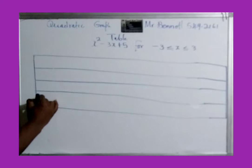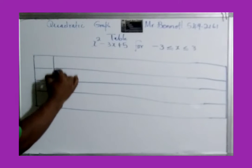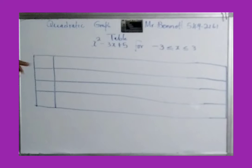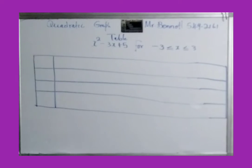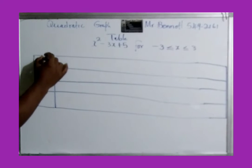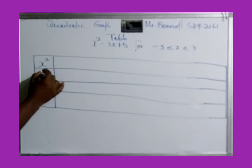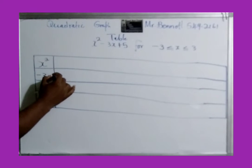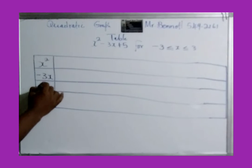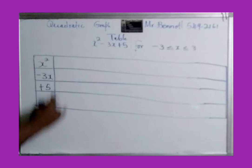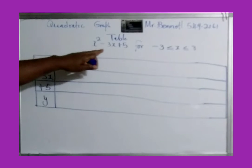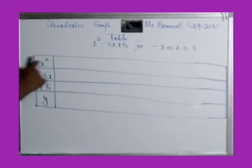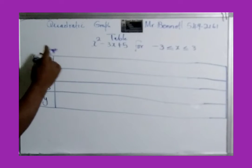I just want to show you guys step by step. What we're going to be doing is write back this formula — x squared minus 3x plus 5 — and then we have y. Now these are the x values.